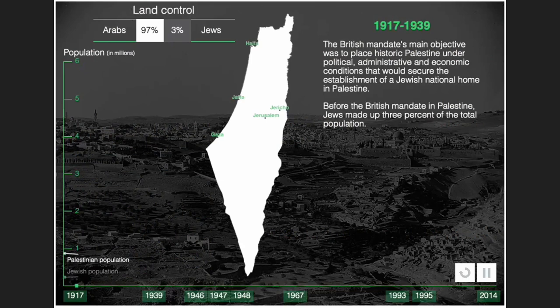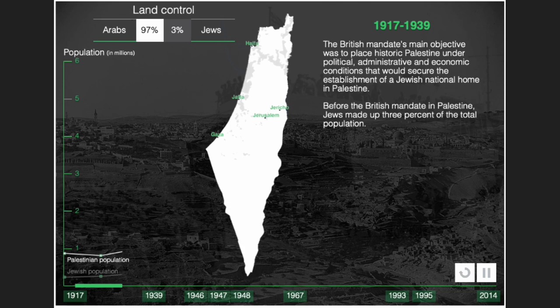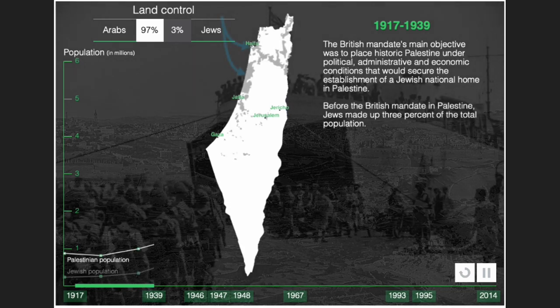Let us look at 1917 to 2014 more closely. During the British Mandate period from 1917 to 1939, the main objective was to place historic Palestine under political, administrative, and economic conditions that would secure the establishment of a Jewish national home. Before the British Mandate, Jews made up only 3% of the total population in Palestine.